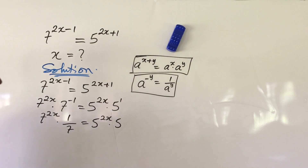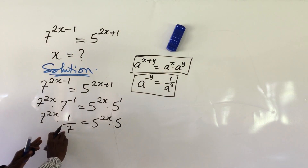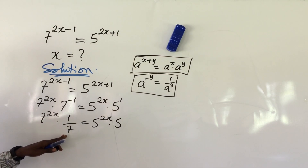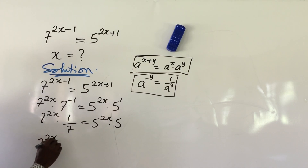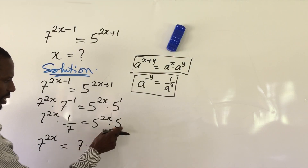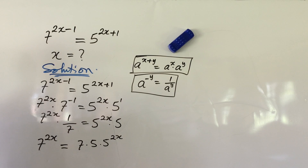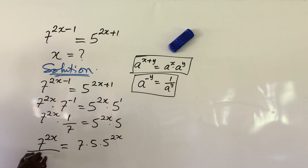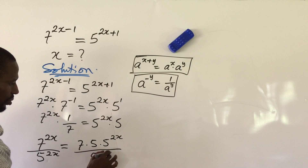And 5 to the power of 1 is the same thing as 5. From here, we can multiply both sides by 7 to eliminate the 1 over 7. Our equation becomes 7 to the power of 2x equal to 7 times 5 times 5 to the power of 2x. At this point, let's divide both sides by 5 to the power of 2x.